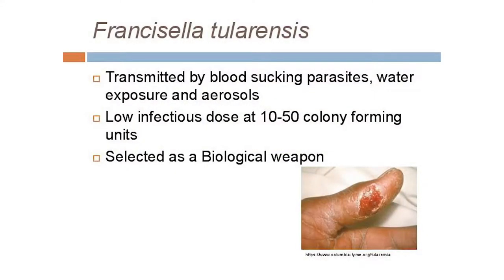I'll give some background on each of these pathogens. The first is Francisella tularensis — it is a bacteria, and you can be infected through blood-to-blood contact, contaminated water, or aerosol. It causes a disease called tularemia, which can present as a skin infection from a tick bite or as pneumonia from aerosol. An interesting fact: Francisella tularensis was actually selected by the U.S. as a biological weapon in the 1950s, so it's a great thing we have that floating around the province.